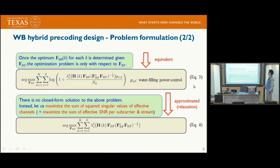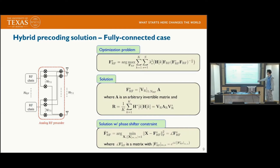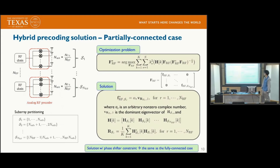Unfortunately, there is no closed-form solution to equation three. Instead, we maximize the sum of squared singular values of the effective channels. The physical meaning is to maximize the sum of effective SNR per subcarrier per stream. In this case, a closed-form solution exists: Vr is the right singular vector of the sample covariance matrix. Considering the phase-shift constraint, the solution for the fully-connected case and the partially-connected case can both be derived in closed form.